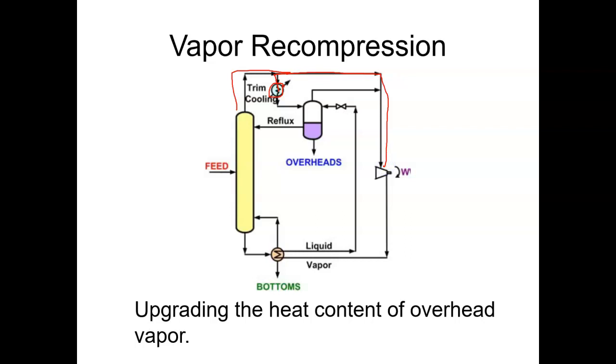This compressor will naturally compress the vapor and increase the temperature further. This vapor will then come to the reboiler. Since it has been already compressed the temperature has been increased and then it exchanges the energy with the liquid coming from the bottom of the column.